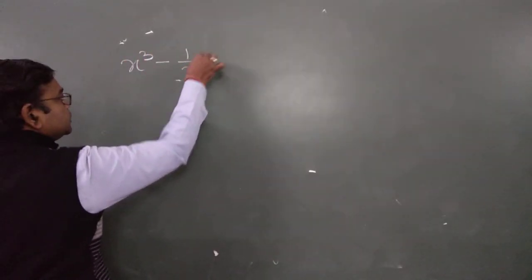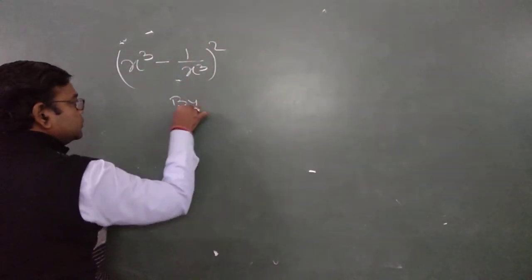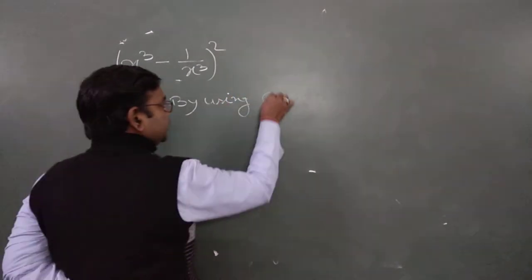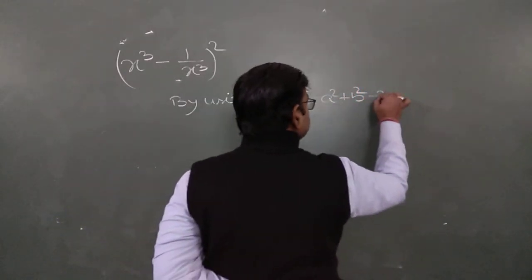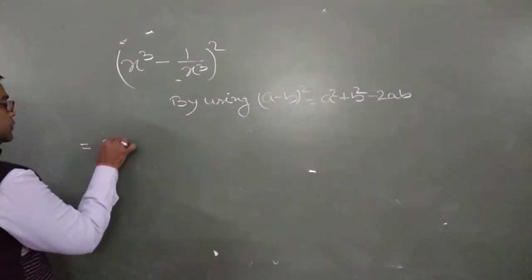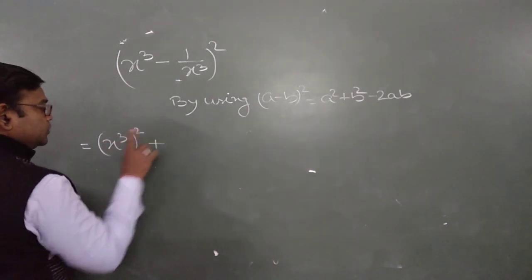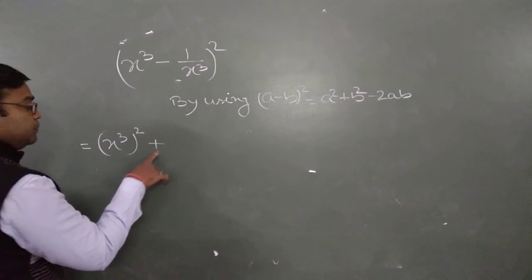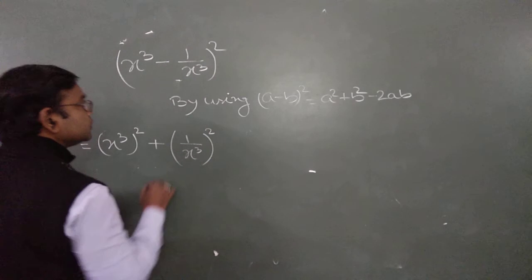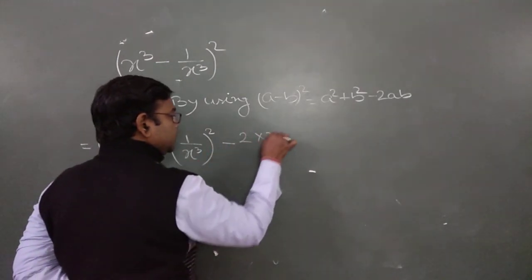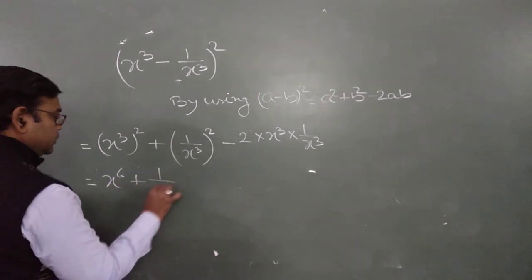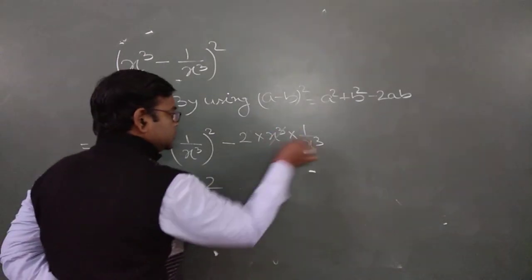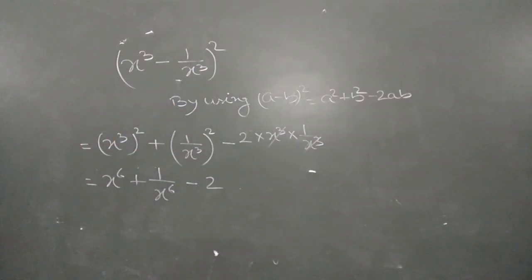Our next question: find the square of (x³ - 1/x³). By using (a - b)² = a² + b² - 2ab: first term squared is (x³)² = x⁶, second term squared is (1/x³)² = 1/x⁶, and minus 2 times x³ times 1/x³ — these cancel — giving minus 2. So the result is x⁶ plus 1/x⁶ minus 2.